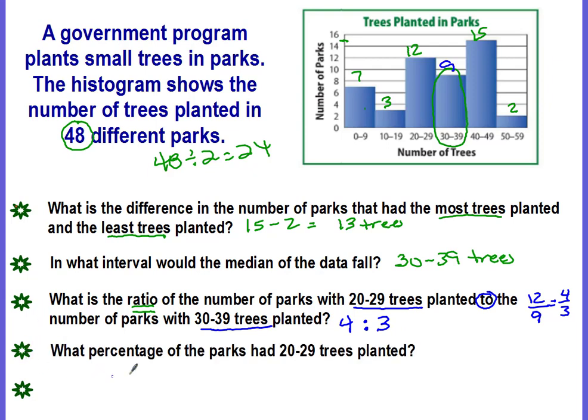What percentage of the parks had 20 to 29 trees planted? Okay, we know that there were 12. Right here, 20 to 29 trees planted. And we know the percents out of 100. But is this showing 100 different parks? No, it's not showing 100 different parks. It's only showing the 48. So this is 12 out of 48.